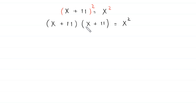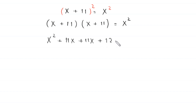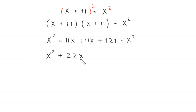Expanding: x times x becomes x squared, x times 11 becomes 11x, 11 times x becomes 11x, and 11 times 11 becomes 121. So we have x squared plus 22x plus 121 equals x squared.